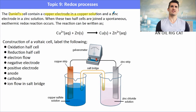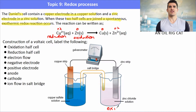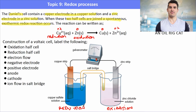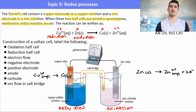The Daniel cell contains copper and zinc half cells. When joined, the spontaneous exothermic reaction releases energy. Assigning oxidation numbers, we can see zinc has undergone oxidation and copper has undergone reduction. The zinc half equation: Zn(s) → Zn²⁺ + 2e⁻ (two electrons added to the right to balance charge). The copper half equation: Cu²⁺ + 2e⁻ → Cu(s) (two electrons added to the left to balance charge).